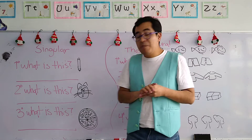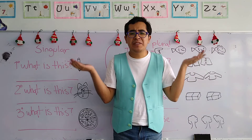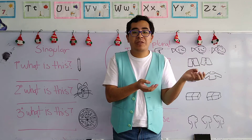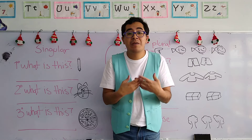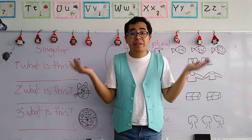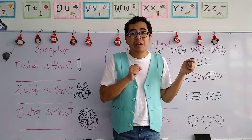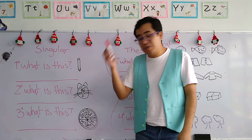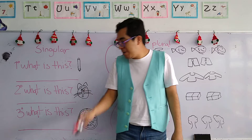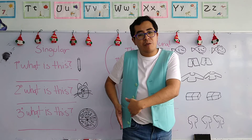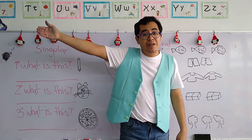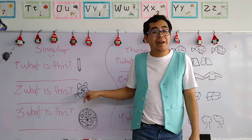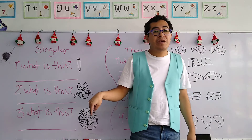Very good. Now, remember the question: whenever we say 'What is this?' nos estamos refiriendo a que no sabemos qué objeto tenemos en frente de nosotros, o no sabemos cómo se llama. Por lo tanto, utilizamos esa pregunta — 'What is this?' — y lo vamos a señalar, porque lo tenemos muy cerquita. Like my markers that I have right here. Are they near or are they far? They are near, están cerca; por lo tanto, puedo decir, 'What are these?' — ¿qué son estos?